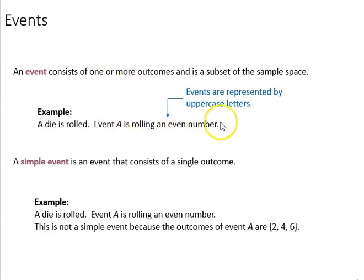Event A is rolling an even number, for example, and a simple event is one that consists of a single outcome.